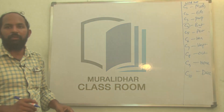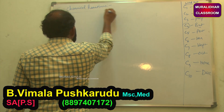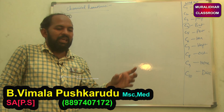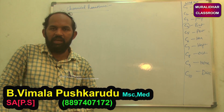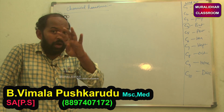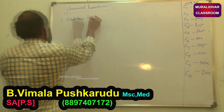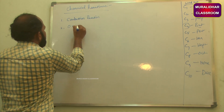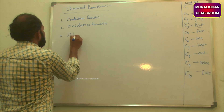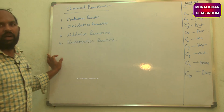Next, we are going to discuss some important chemical reactions of organic compounds. Most organic compounds mainly undergo four types of chemical reactions: first, combustion reaction; second, oxidation reaction; third, addition reaction; and fourth, substitution reaction.